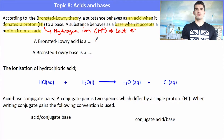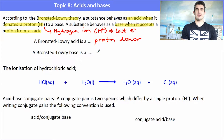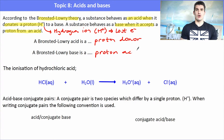So a Brønsted-Lowry acid is a proton donor — it gives away its proton. A Brønsted-Lowry base is the opposite: it's a proton acceptor or proton receiver.